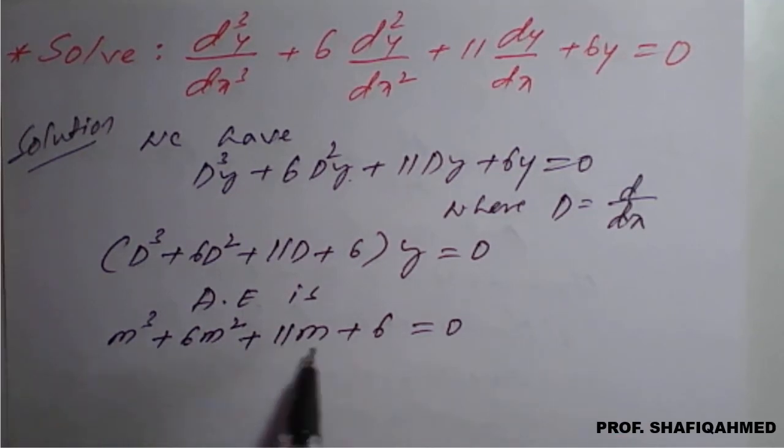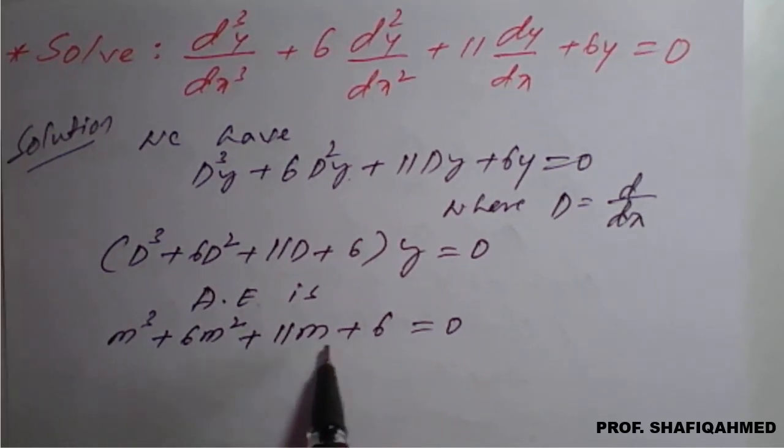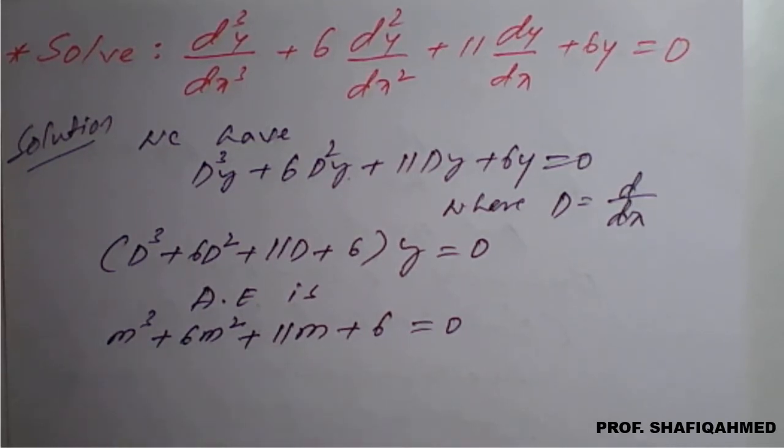On simplification, if you make pairs, if you take first two and last two, you can take m² common and get m plus 6. But here, you cannot take any common, therefore it cannot be factorized directly. For this, either we have to go another method we call synthetic division method, or else I will use the calculator for this simplification. Let us see with the help of calculator how to get the roots.